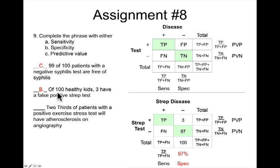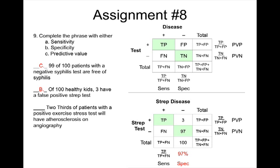The next phrase: 'Of 100 healthy kids, 3 have a false positive strep test.' We know there are 100 healthy kids — people without strep disease. We know that 3 have a positive test; they are healthy but with a positive test, so that is a false positive. Therefore, there are 97 true negatives (100 minus 3). Specificity, defined as true negatives over true negatives plus false positives, is 97%.